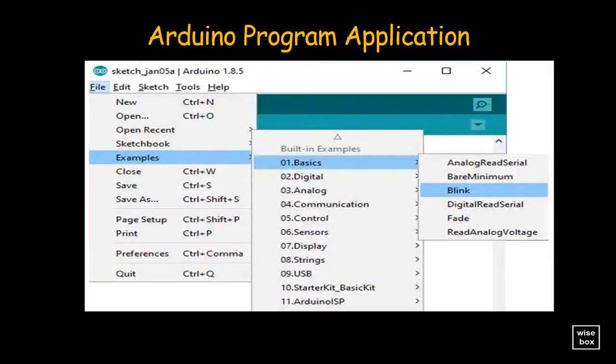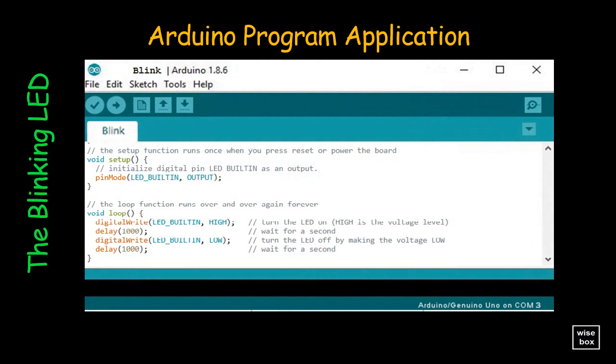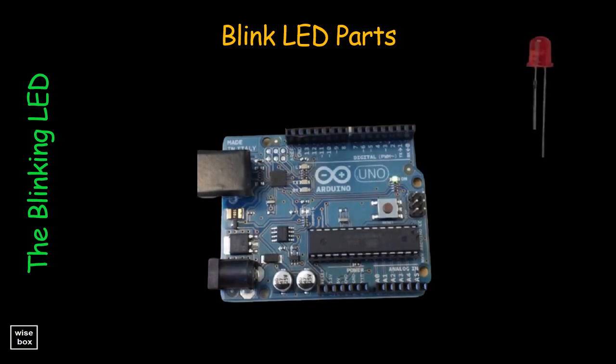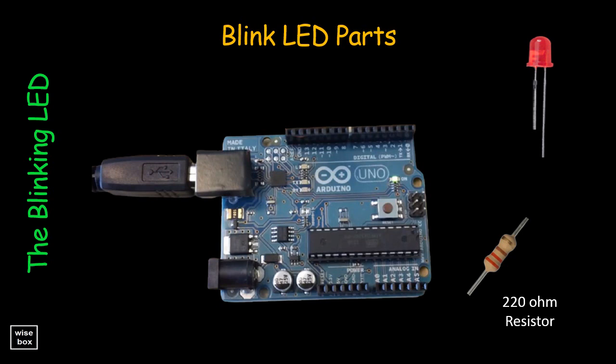Now let's try to use the Arduino on an actual program application. Here is a simple program you can try on your own — the blinking LED program. You may download the program or follow the link from the description below and paste it into the code area of your Arduino IDE software. Here's what you need: the Arduino Uno board, an LED bulb, a 220-ohm resistor, and the blink LED program uploaded successfully.